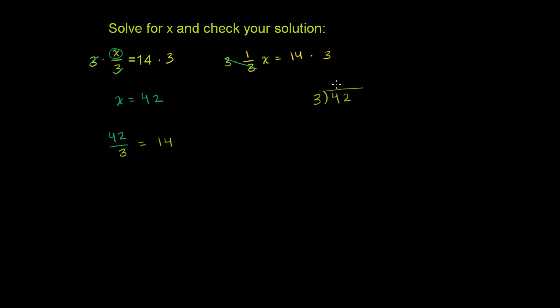3 into 4. 3 goes into 4 one time. 1 times 3 is 3. You subtract. 4 minus 3 is 1. Bring down the 2. 3 goes into 12 four times. So 3 goes into 42 14 times. So this right over here simplifies to 14. And it all checks out. So we're done.